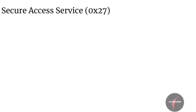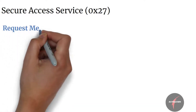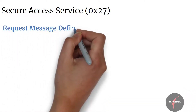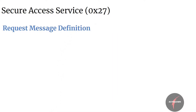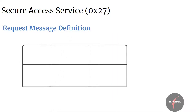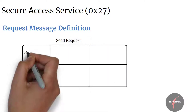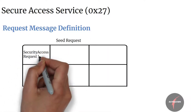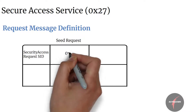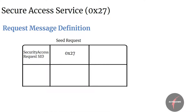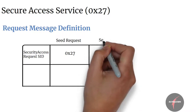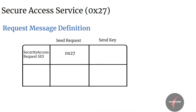To start with, let's look into the request message definition of the seed request and send key service together. In the request message definition for seed request, we have the secure access request SID mapped to value 27. In case of the request message definition for send key request, we also have the secure access request SID mapped to value 27.